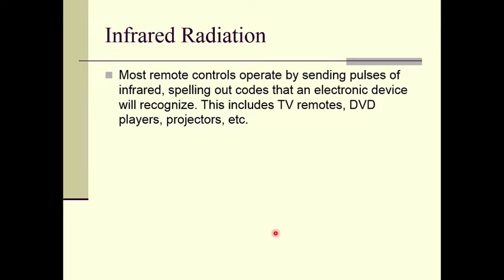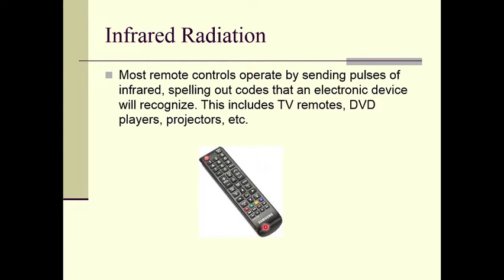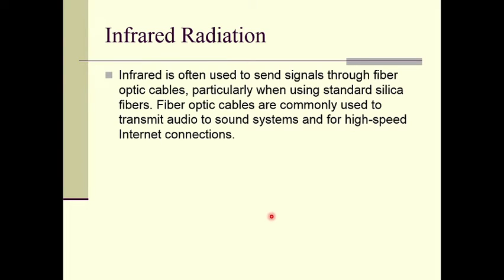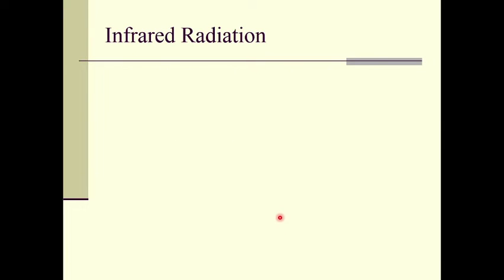Most remote controls operate by sending pulses of infrared, spelling out codes that an electronic device will recognize. This includes TV remotes, DVD players, projectors, etc. Infrared is often used to send signals through fiber optic cables, particularly when using standard silica fibers. Fiber optic cables are commonly used to transmit audio to sound systems and for high-speed internet connections.